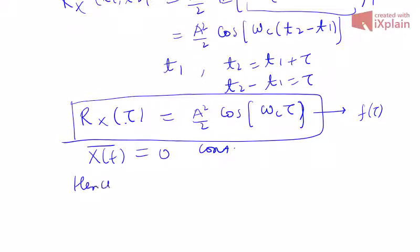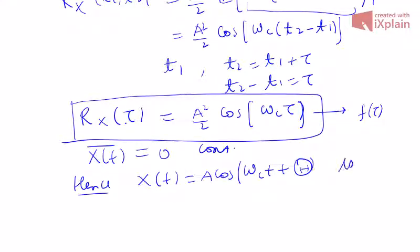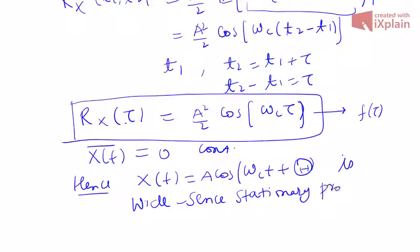Hence both conditions are satisfied: the mean is 0 (constant) and the autocorrelation is only a function of the time difference τ. Therefore, the random process x(t) = A cos(ωc·t + Θ) is a wide sense stationary, or WSS, process. This much for today's lecture. We will continue with more concepts and examples in the next lecture. Thank you.